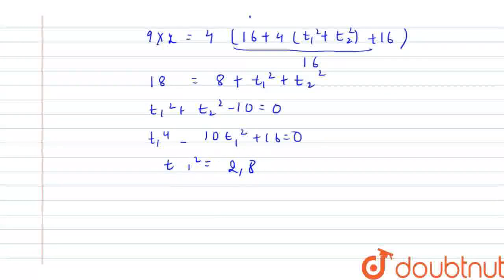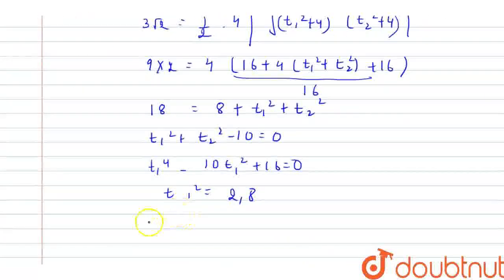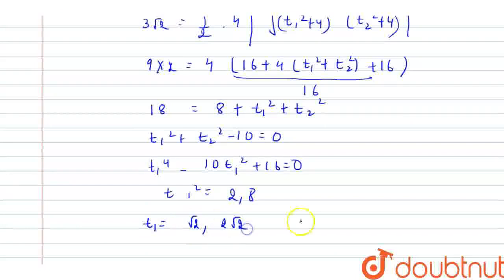Proceeding forward, solving this quadratic equation, we will be getting the value of t1 square would be equal to 2 comma 8. If t1 square is equal to 2 comma 8, then what would be the value of t1? t1 will be having two values, that is, root 2 comma 2 root 2. Similarly, t2 would also be having the same values, that is, root 2 comma 2 root 2.